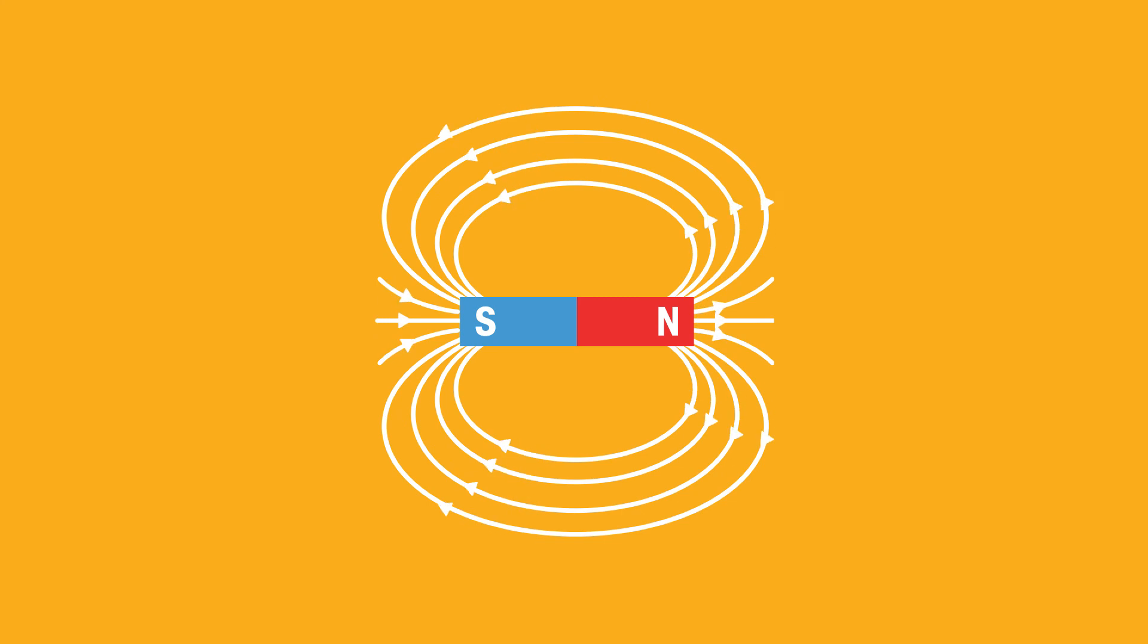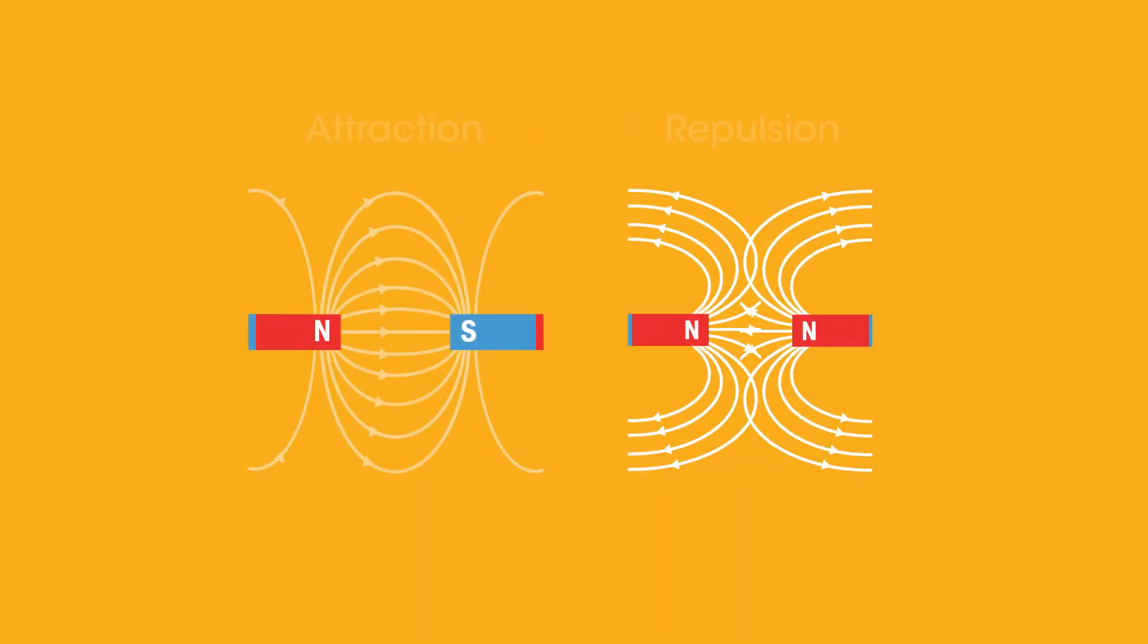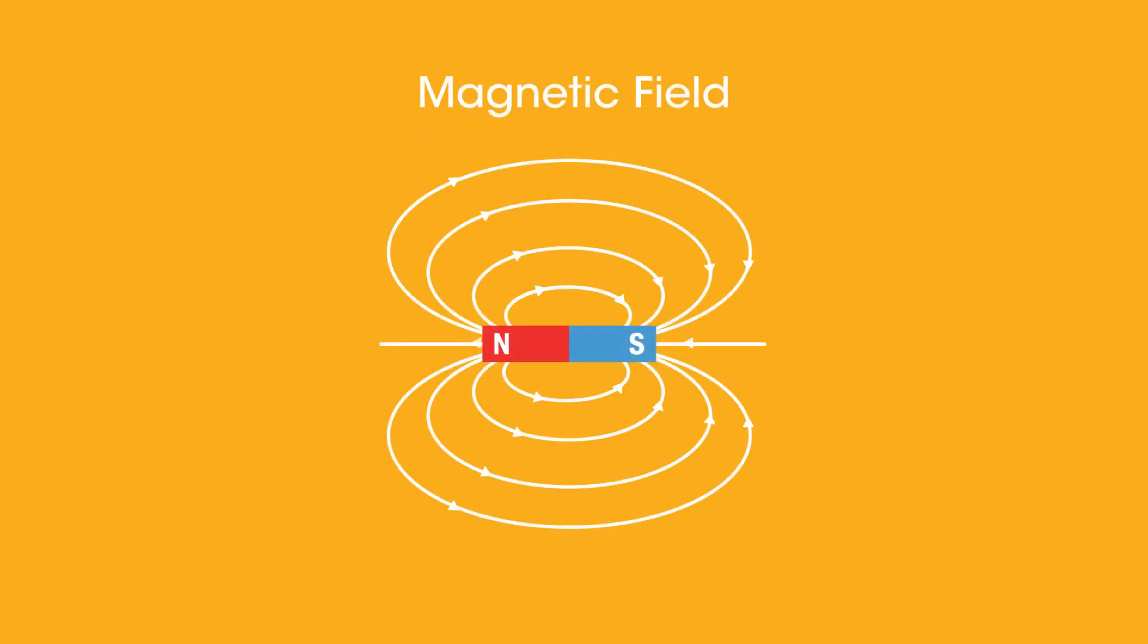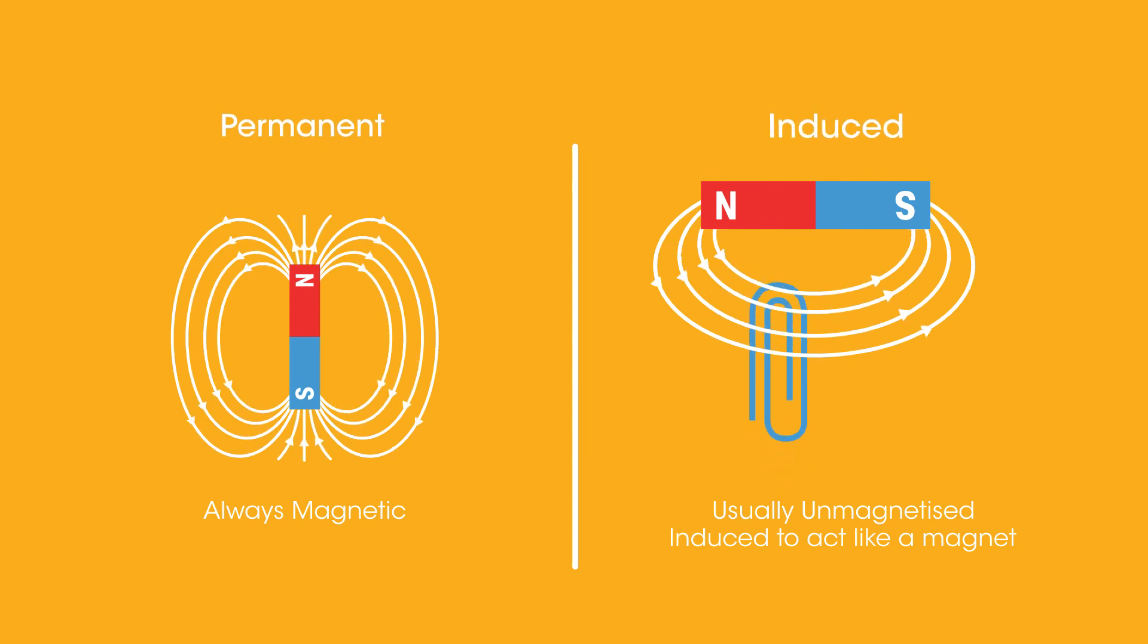So in this video, you learned about the north and south poles in magnets, attraction and repulsion of magnets, magnetic fields, and the difference between permanent and induced magnets.